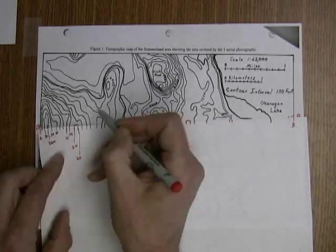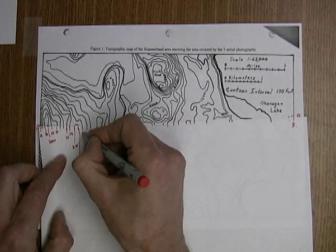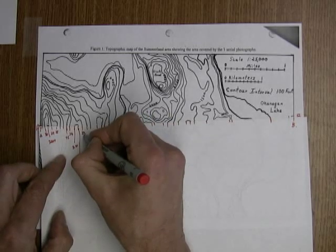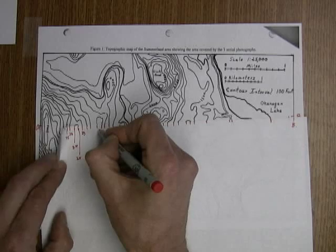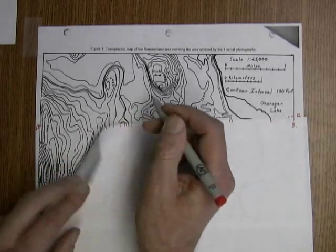This one here actually loops around here so that is also 24 and that one also is 24. See how it's looping around so we've actually crossed the same contour three times. This one here is 23. That's 22, 21.